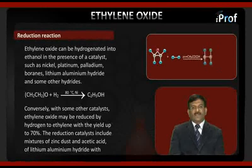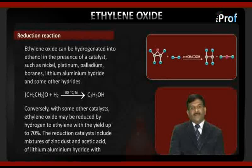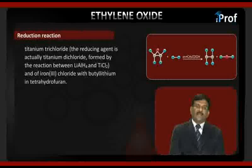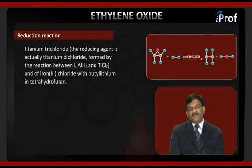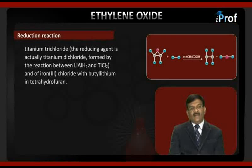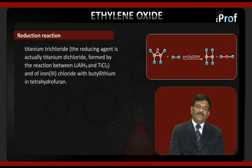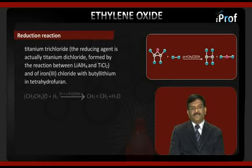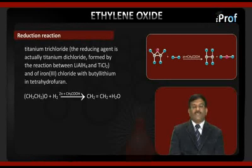Conversely, with some other catalysts, ethylene oxide may be reduced by hydrogen to ethylene with a yield up to 70%. The reduction catalysts include a mixture of zinc dust and acetic acid, lithium aluminum hydride with titanium trichloride. The reducing agent is actually titanium dichloride, formed by the reaction between lithium aluminum hydride and titanium chloride, and of iron(III) oxide and iron(III) chloride (ferric chloride) with butyl lithium in tetrahydrofuran (THF).